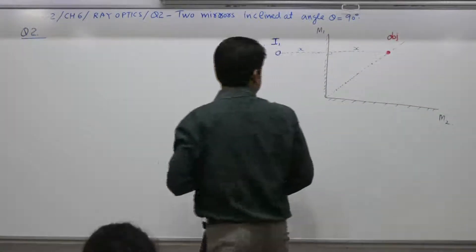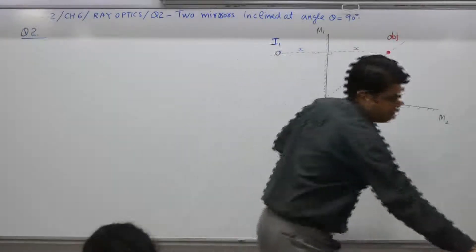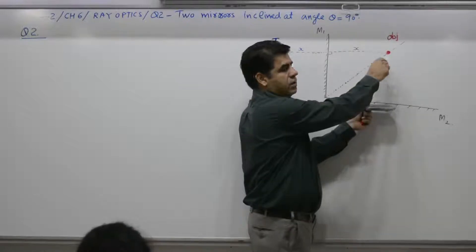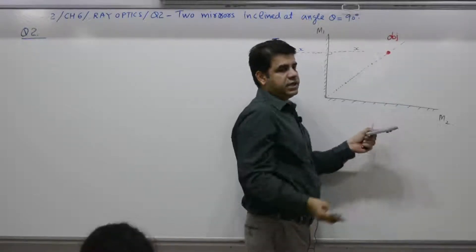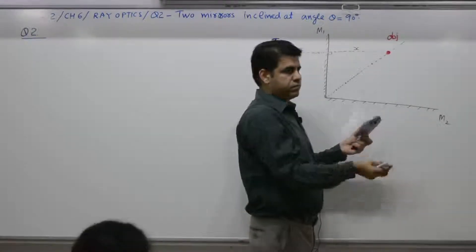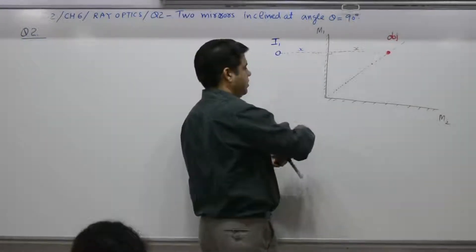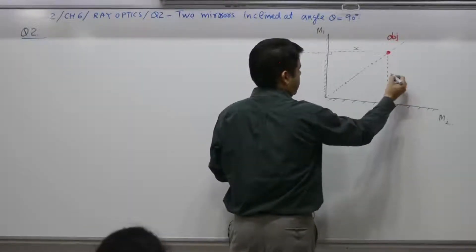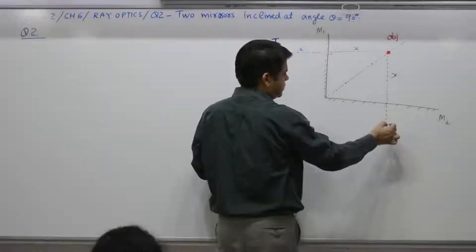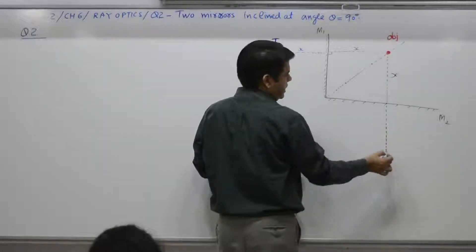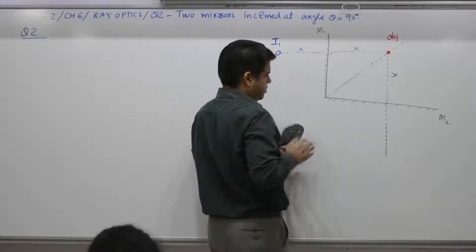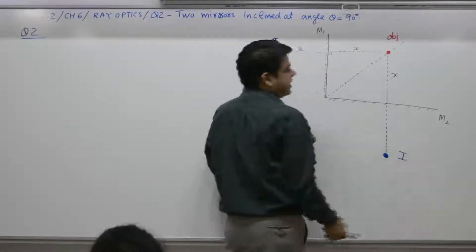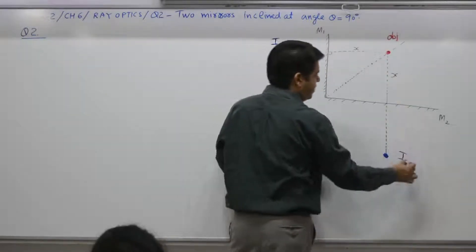Now for mirror M2: the object is at distance x from mirror M2 as well. By the same rule, the image distance equals the object distance x. So the image of the object in mirror M2 is I2, also at distance x on the back side of mirror M2.